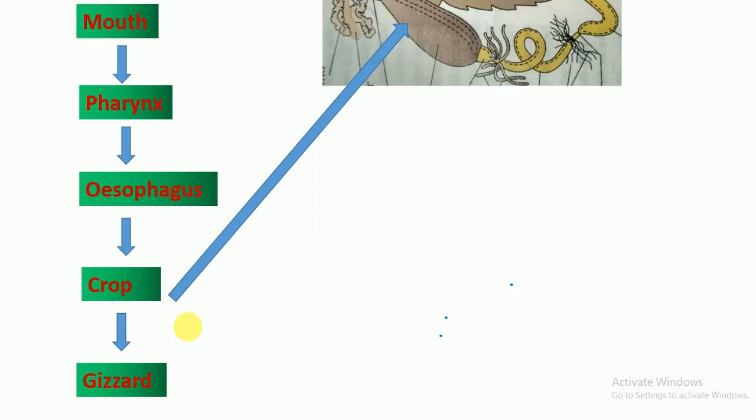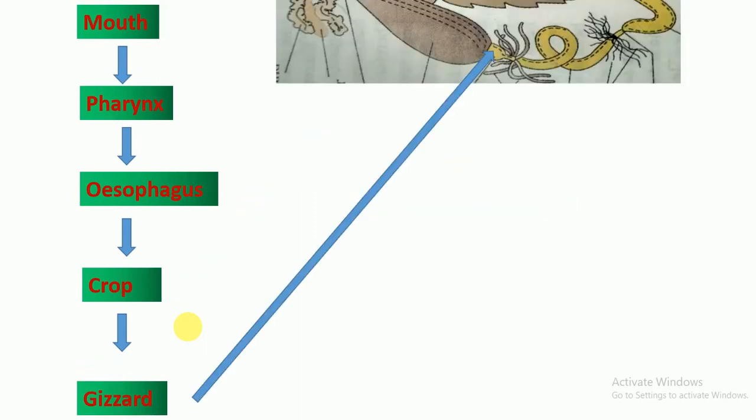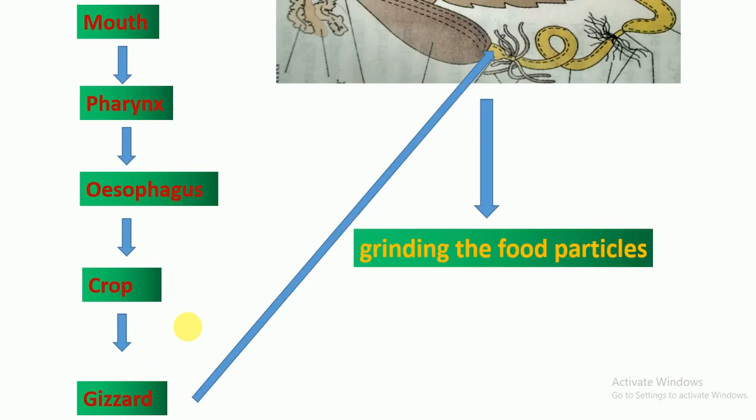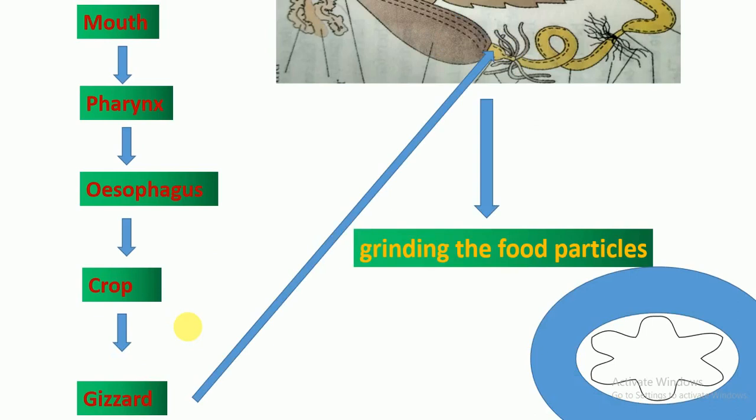The crop is used for the storage of food, and the gizzard is used for grinding food particles. The gizzard has two layers. The outer layer is made up of thick circular muscles, and the inner layer is made up of cuticle that forms six chitinous plates called teeth.